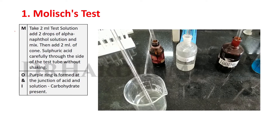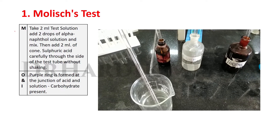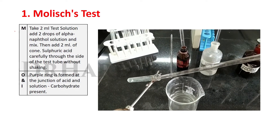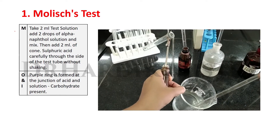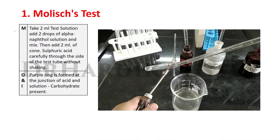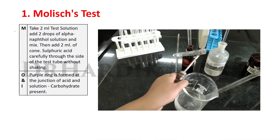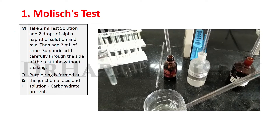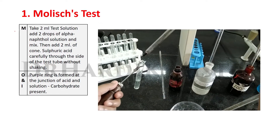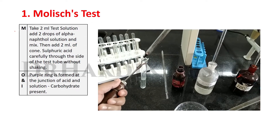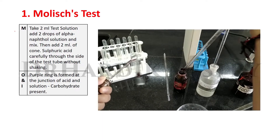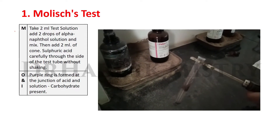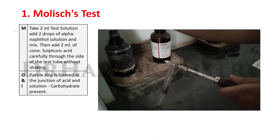Method: Take 2 ml test solution. Add 2 drops of alpha-naphthol solution and mix. Then add 2 ml of concentrated sulfuric acid carefully through the side of the test tube without shaking.